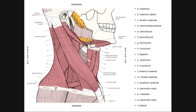Muscle H is omohyoid, right here. This is a two-bellied muscle — this is the superior belly of omohyoid. The inferior belly is down here. Remember they are both fused at an intermediate tendon, which is deep to the sternocleidomastoid so we can't see it. A fascial sling from the clavicle holds that intermediate tendon and forces this muscle into this bent shape. So here's the superior belly and here's the inferior belly of omohyoid.